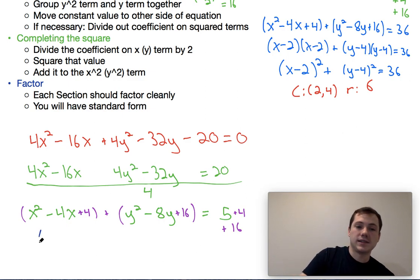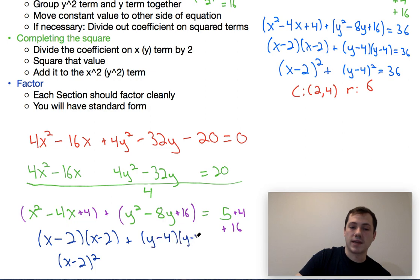Now when I go to factor it, again, I'm going to end up with x minus 2 times x minus 2, which is x minus 2 squared. And I'm going to end up with y minus 4 times y minus 4, which is y minus 4 squared. And I'm going to set that equal to the right side, which now happens to be 25.